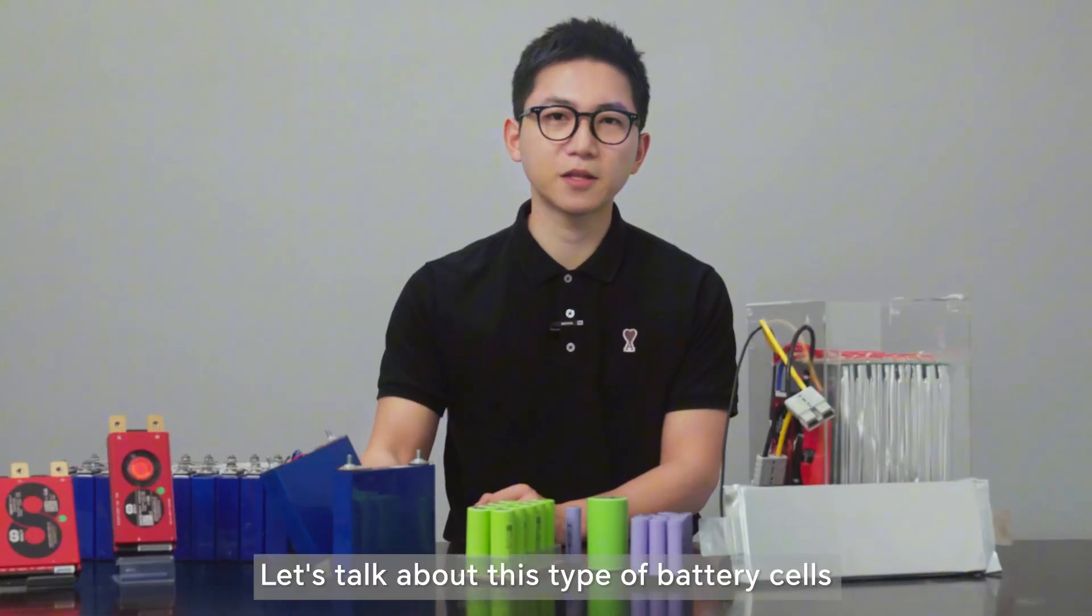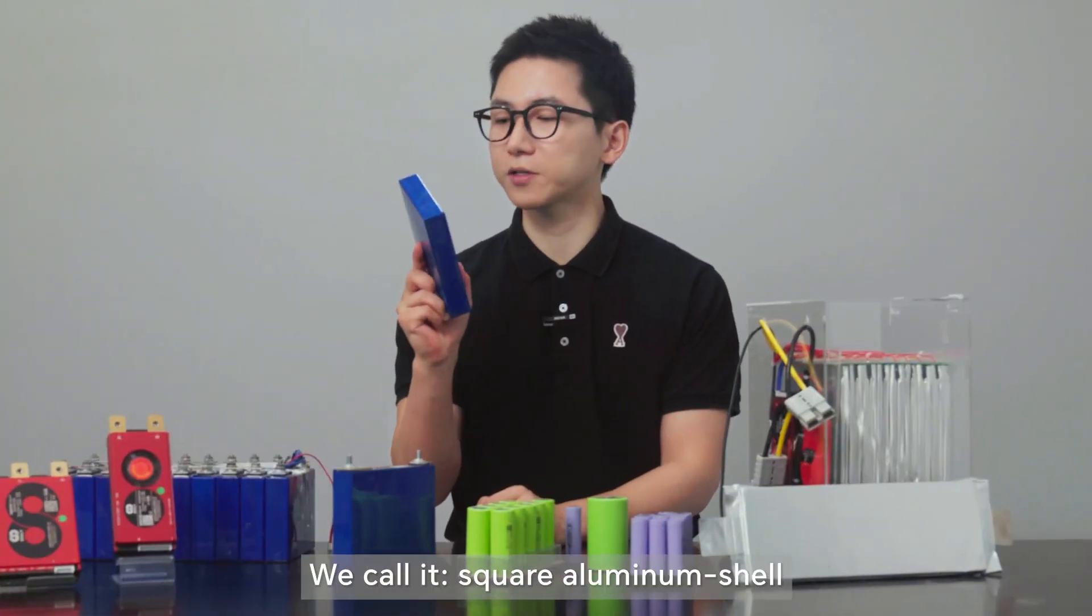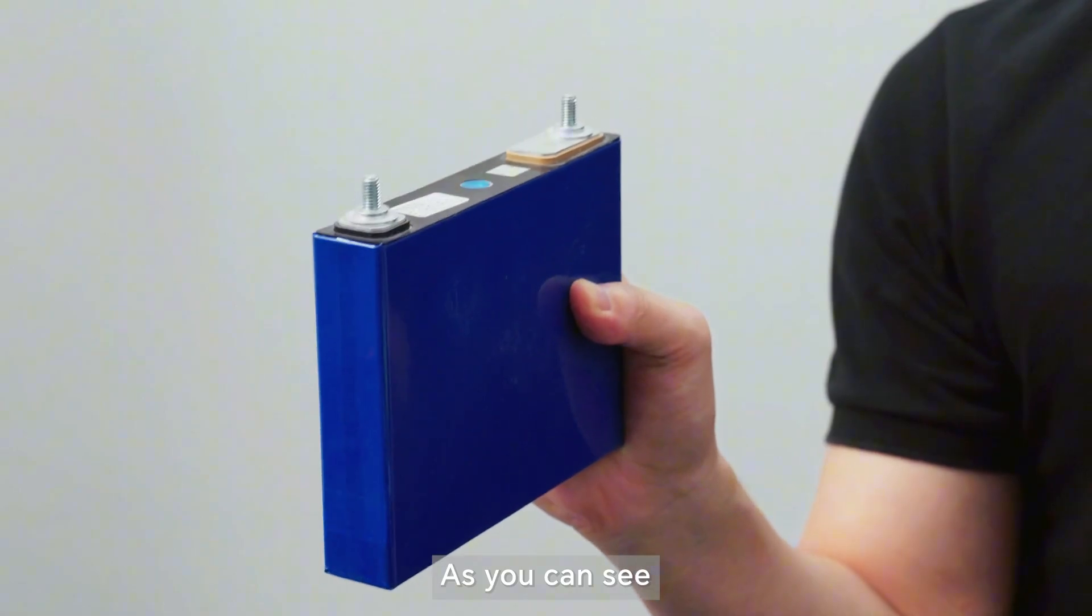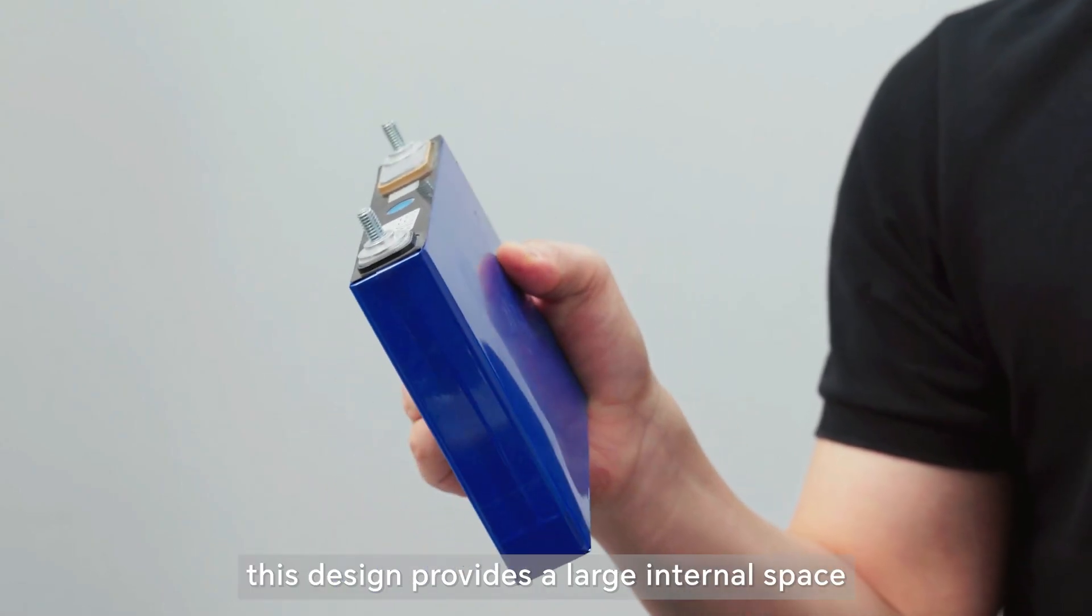Next, let's talk about this type of battery cells. We call it a square aluminum shell. As you can see, this design provides a large internal space.